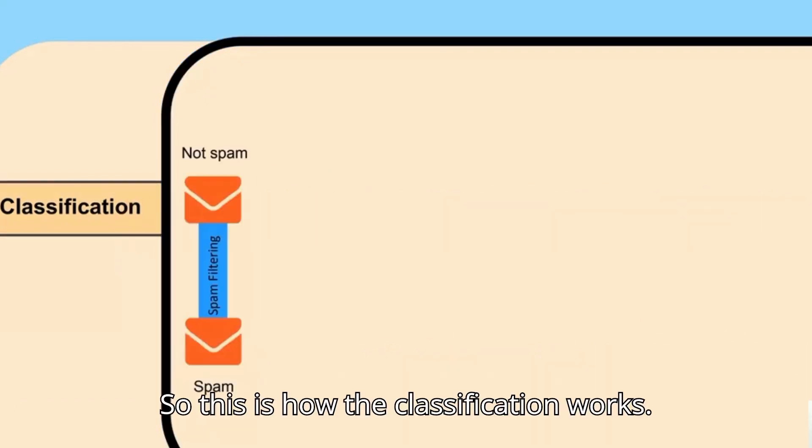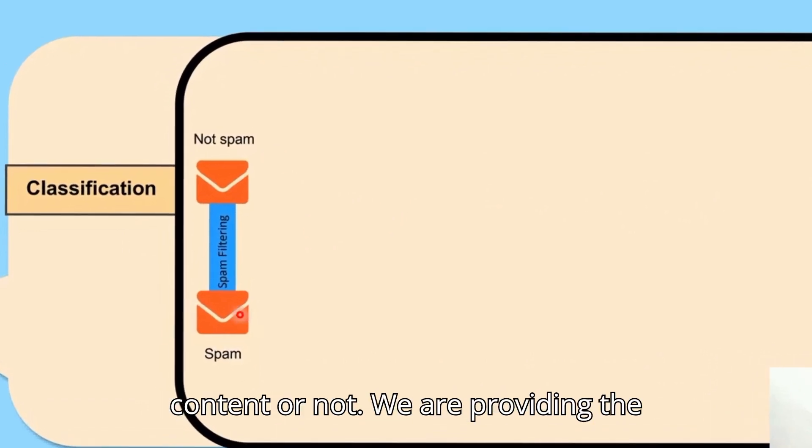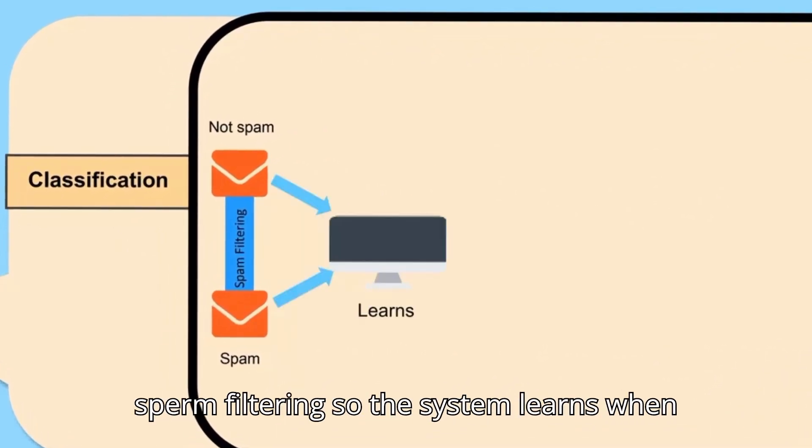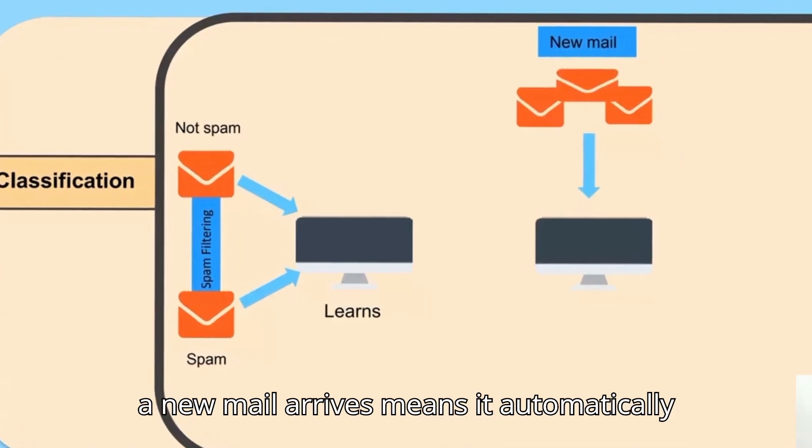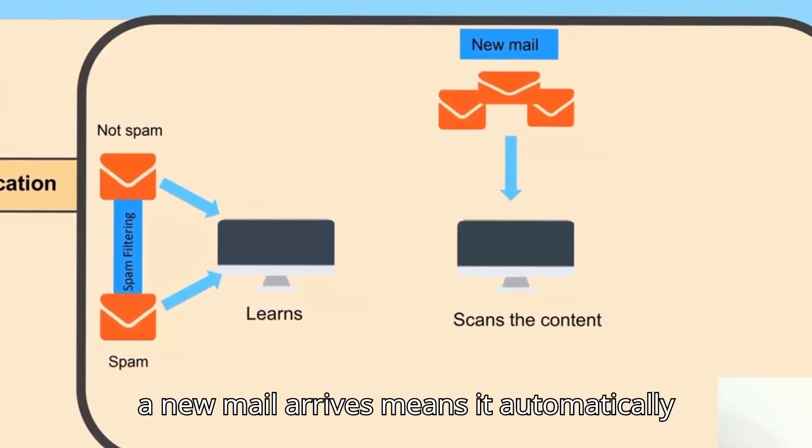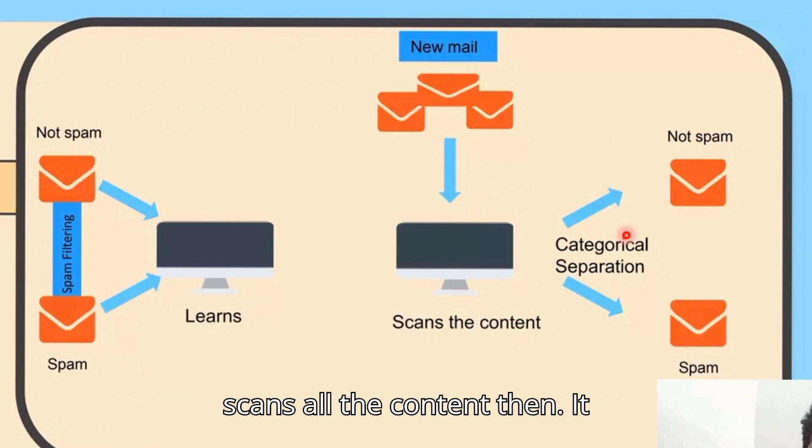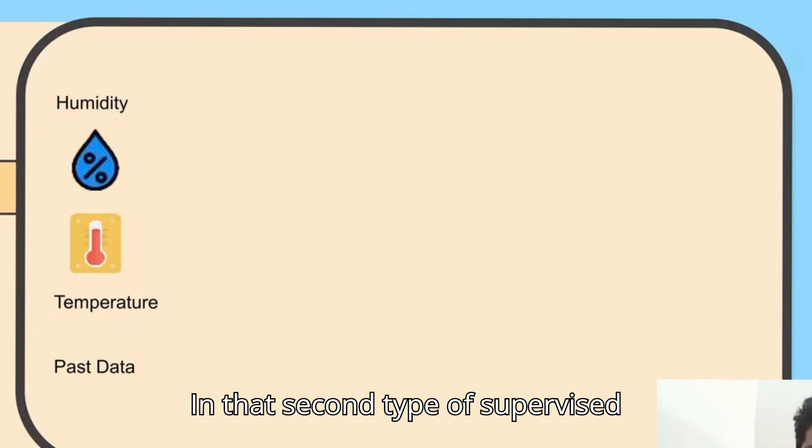Classification works to identify whether a mail is spam content or not. We provide spam filtering, so the system learns. When a new mail arrives, it automatically scans all the content and provides two categories: whether that mail is spam or not.